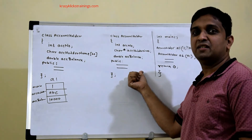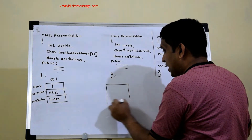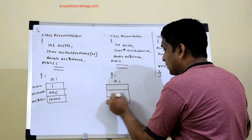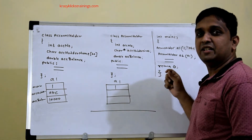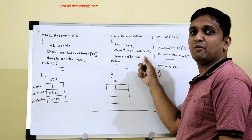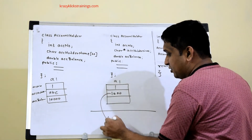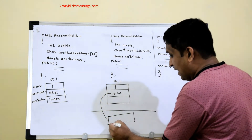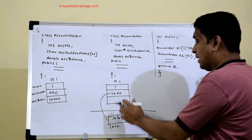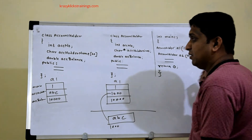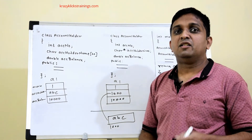When the name is a character pointer, the size of the class is 16 bytes, so a1 allocates 16 bytes on the stack. The id is 1, and inside the parameterized constructor memory is allocated on the heap for the name pointer. That heap address is stored in the name member, and the string 'abc' is stored at that heap location. The balance 10,000 is also stored in the object.